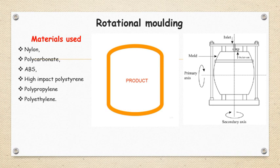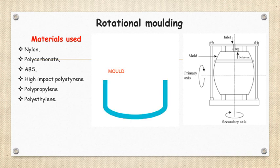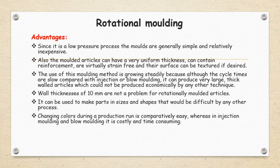What are the advantages of this rotational molding? Since it is a low pressure process, molds are generally simple and relatively inexpensive. Also, the molded articles can have a very uniform thickness and can contain reinforcement as well. You can add some reinforcing materials in between to get higher strength.